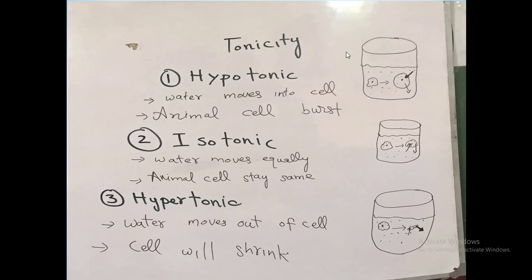The movement of water into the cell happens because the cell has more solute concentration. Due to the elevated solute concentration, water tends to move from the solution or extracellular fluid into the cell, and the cell becomes enlarged. The turgor pressure of the cell increases, and animal cells are more affected because they do not have a cell wall.